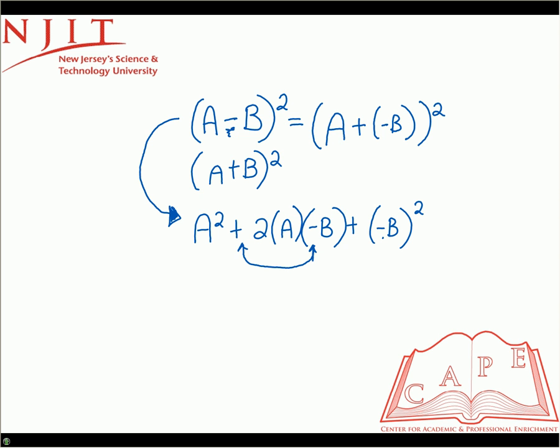So essentially, instead of moving that negative, because it's squared, it's just simply going to disappear. So actually, this just becomes plus B squared.